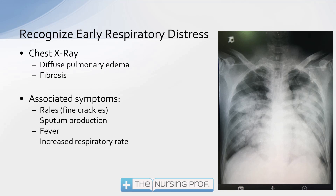Other associated symptoms: with all this diffuse pulmonary edema we're going to hear rales, or fine crackles, throughout the lungs — different from cardiogenic pulmonary edema where they form in the bases and work their way up. We'll also see some sputum production from the inflammation occurring in the interstitial spaces and in the airways themselves. We'll see fever and an increase in respiratory rate.